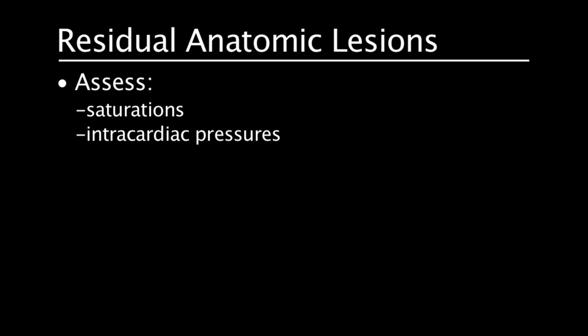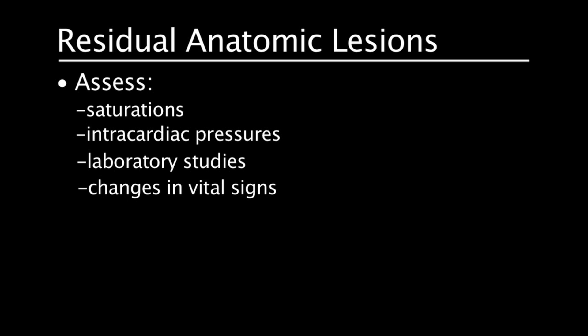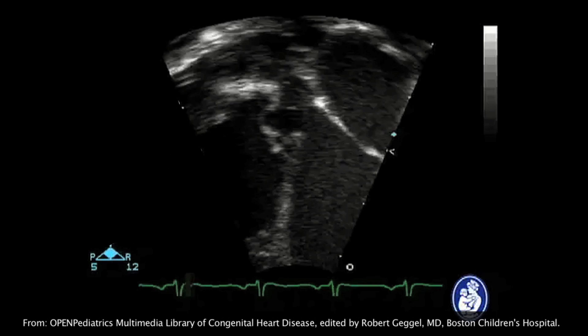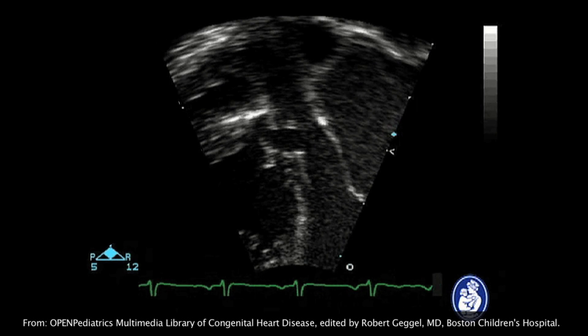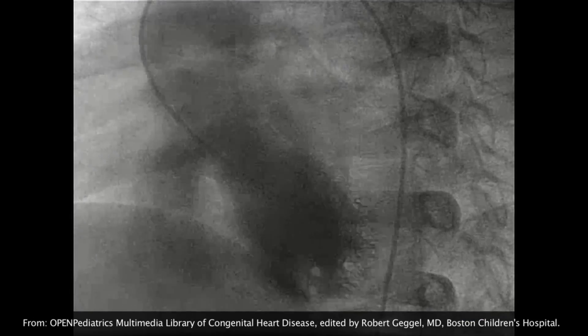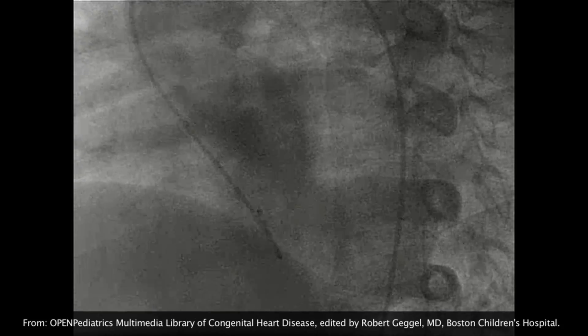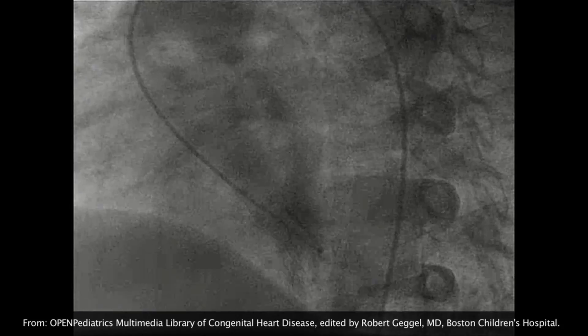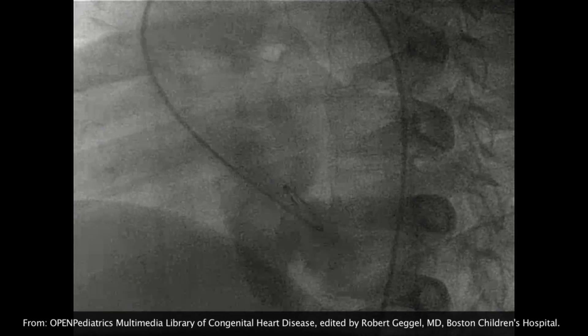Assess saturations and intracardiac pressures, laboratory studies, and changes in vital signs. If pulmonary artery saturation is greater than 80%, a residual ventricular septal defect with left-to-right flow should be suspected. An echocardiogram may be helpful in diagnosing a problem, and cardiac catheterization may be needed for diagnosis and intervention. Residual anatomic lesions may need to be corrected to avoid persistent low cardiac output.